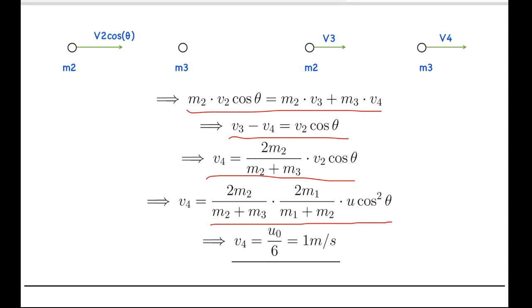On substituting m1, m2 equals 1 kg and m3 equals 2 kg and theta equals 60 degrees, we get the value of v4 to be u0 by 6 or 1 meter per second.